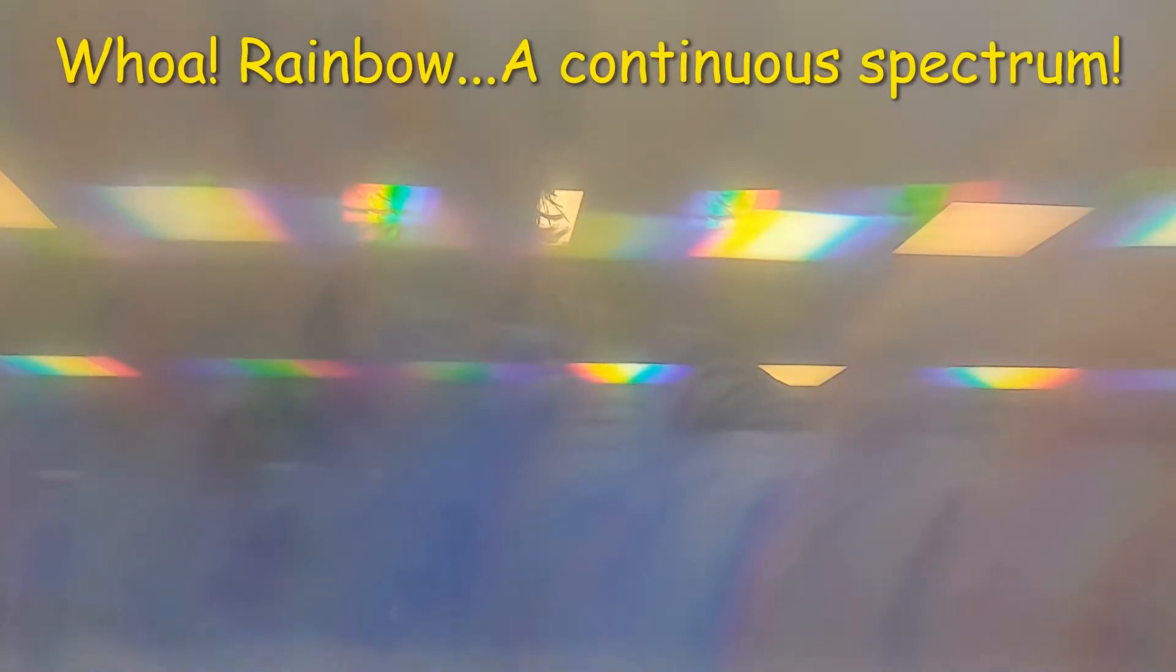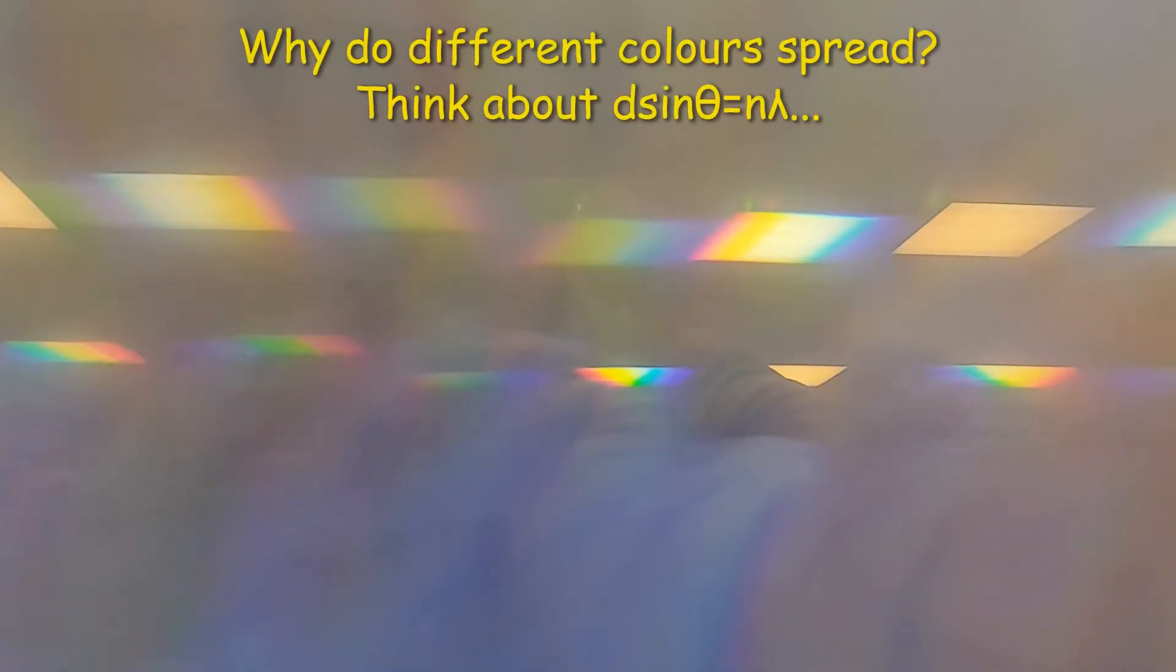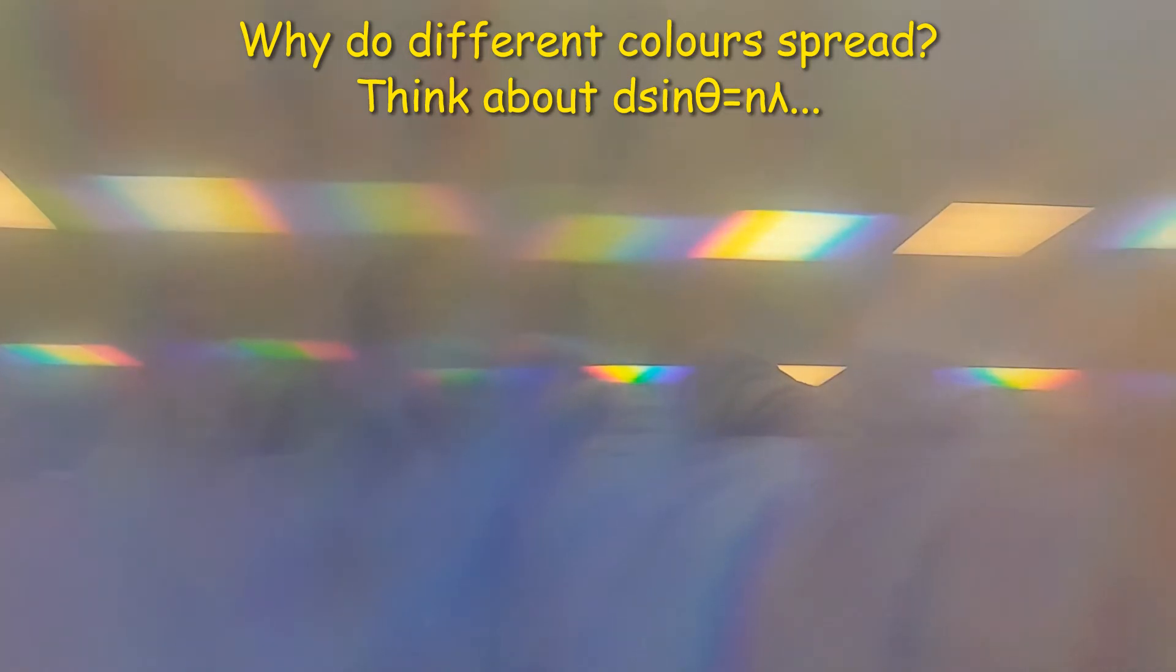For instance, we can visualize this effect by taking this diffraction grating and placing it on my camera. You'll notice that the light from the sources behind me has been decomposed into many different colors. Different colors spread at different angles and become visible from this otherwise white light source.